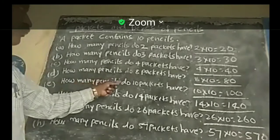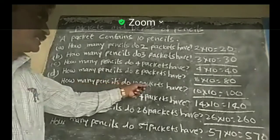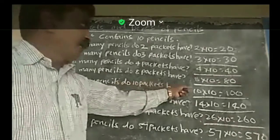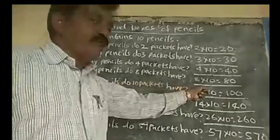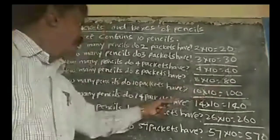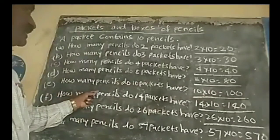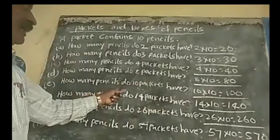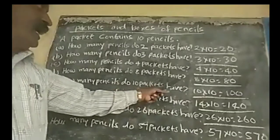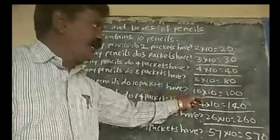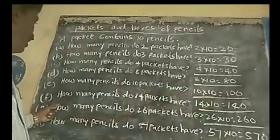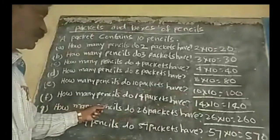How many pencils do 4 packets have? 4 into 10, 4 tens are 40. Next, how many pencils do 8 packets have? 8 into 10, 8 tens are 80.